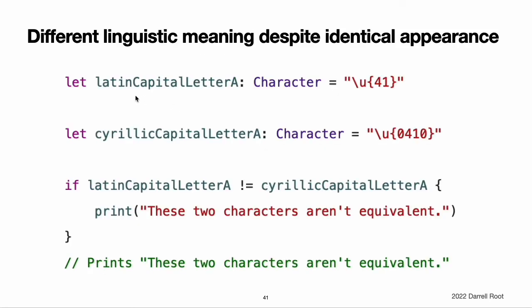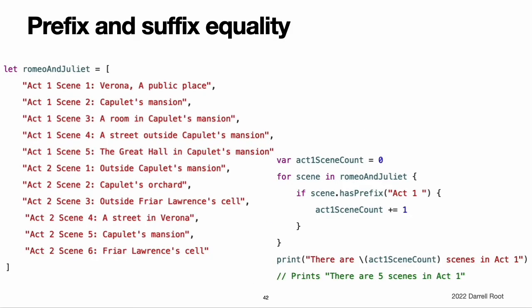Conversely, Latin capital letter A, as used in English, is not equivalent to Cyrillic capital letter A, as used in Russian. The characters are visually similar, but do not have the same linguistic meaning. Note: string and character comparisons in Swift are not locale sensitive. Prefix and suffix equality. To check whether a string has a particular string prefix or suffix, call the string's hasPrefix(_:) and hasSuffix(_:) methods, both of which take a single argument of type String and return a Boolean value.